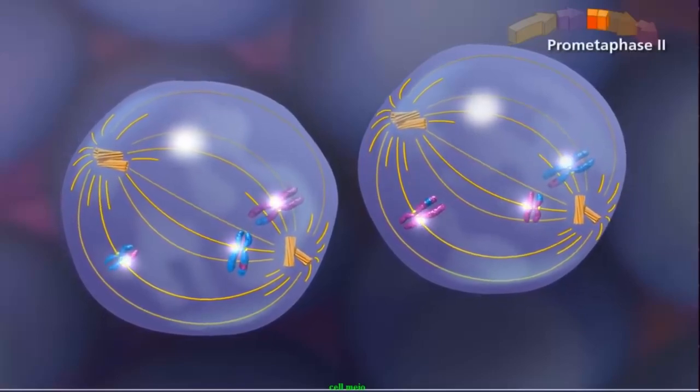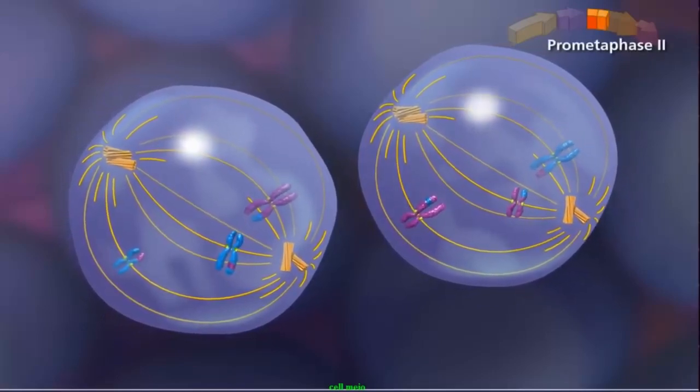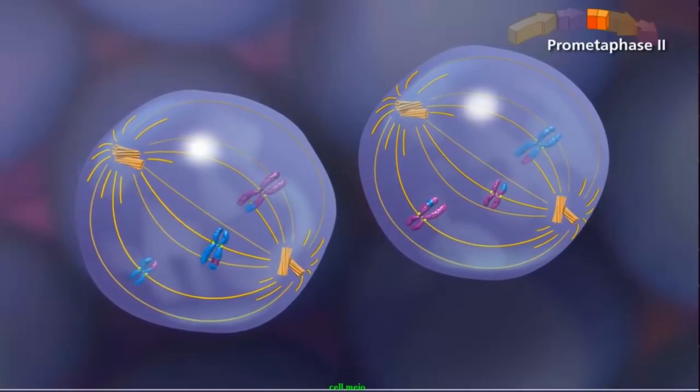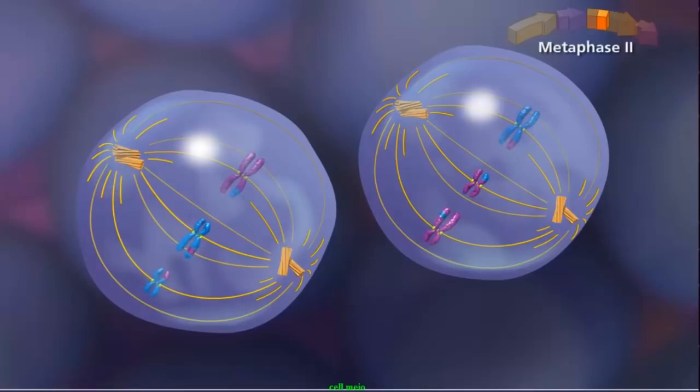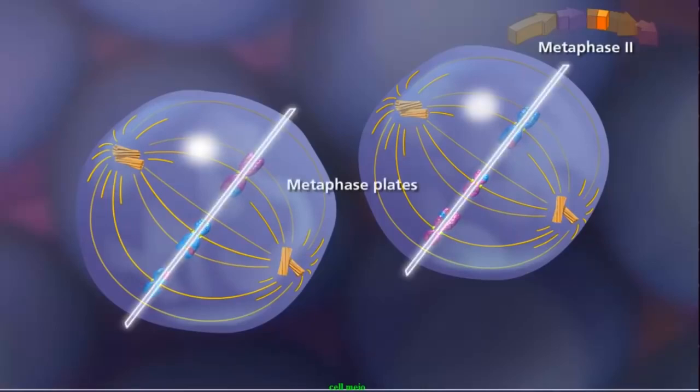In prometaphase II, the sister chromatids attach to the spindle by kinetochore microtubules, with sister chromatids attached to opposite poles. The spindle aligns the sister chromatids along the metaphase plate during metaphase II.